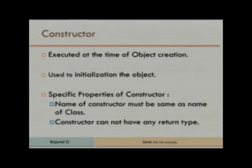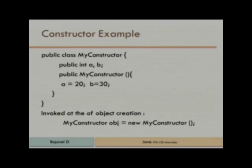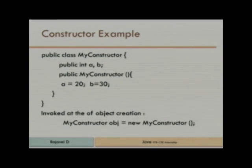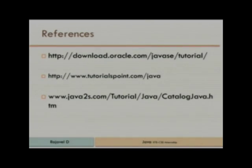The last one is constructor. If you want to initialize values for an object, you can use a constructor. The constructor name should be the same as the class name, and it does not have a return type. You can also overload the constructor — write multiple constructors. The constraints are the same: number of parameters and type of parameters.